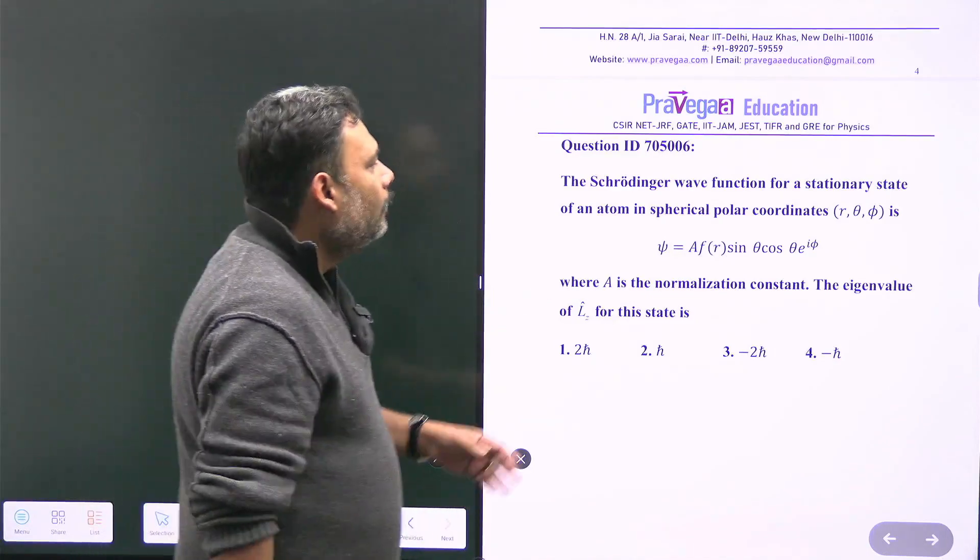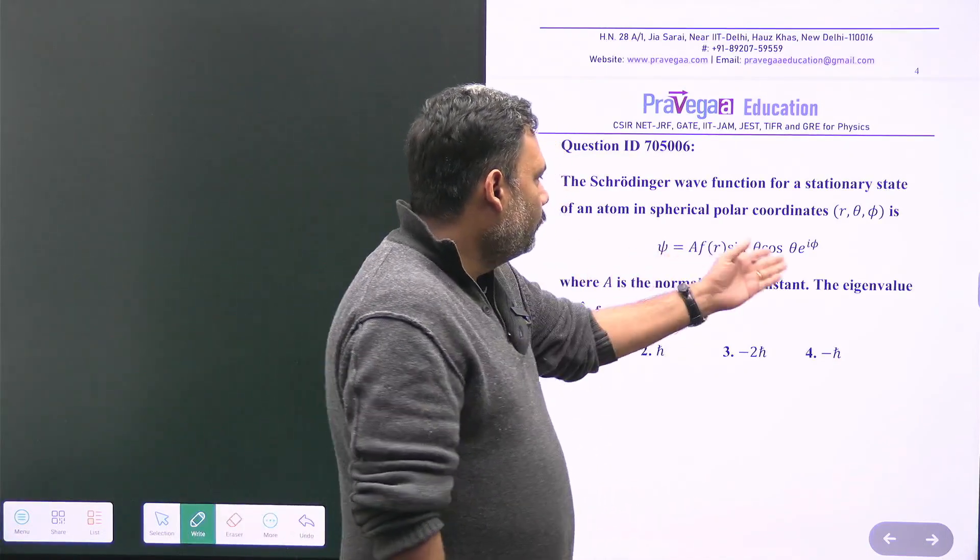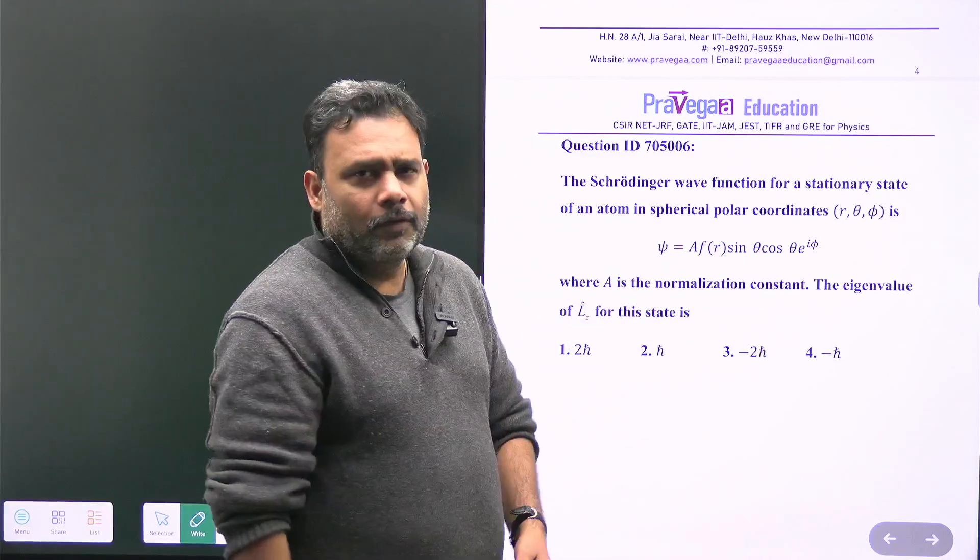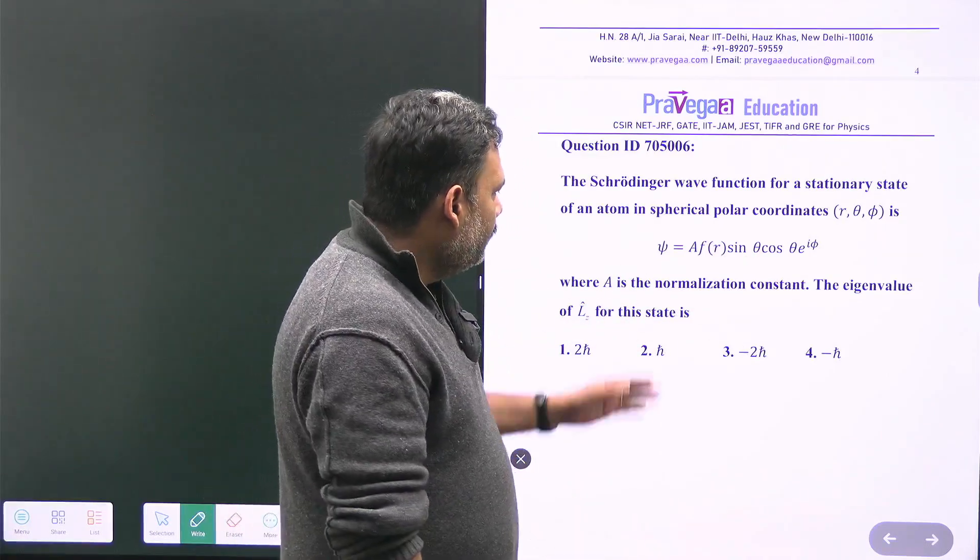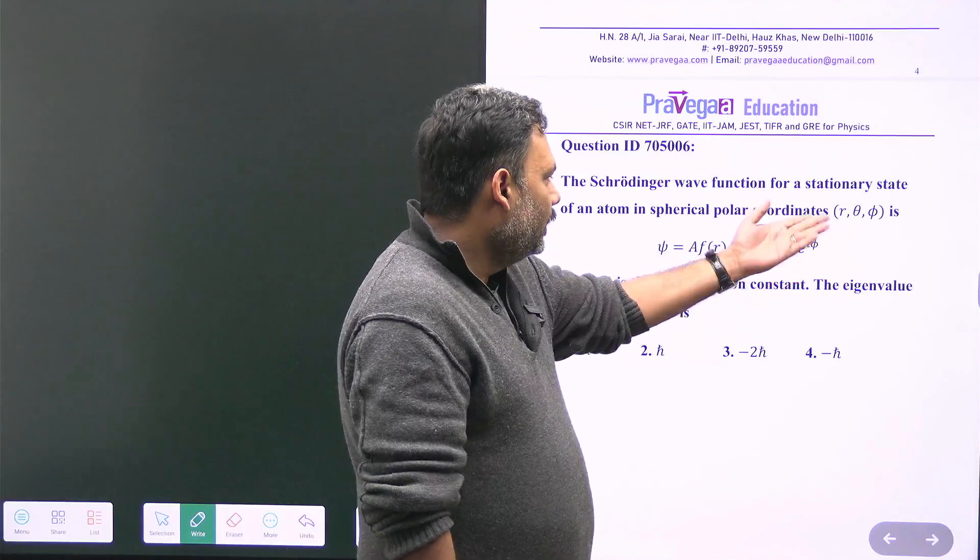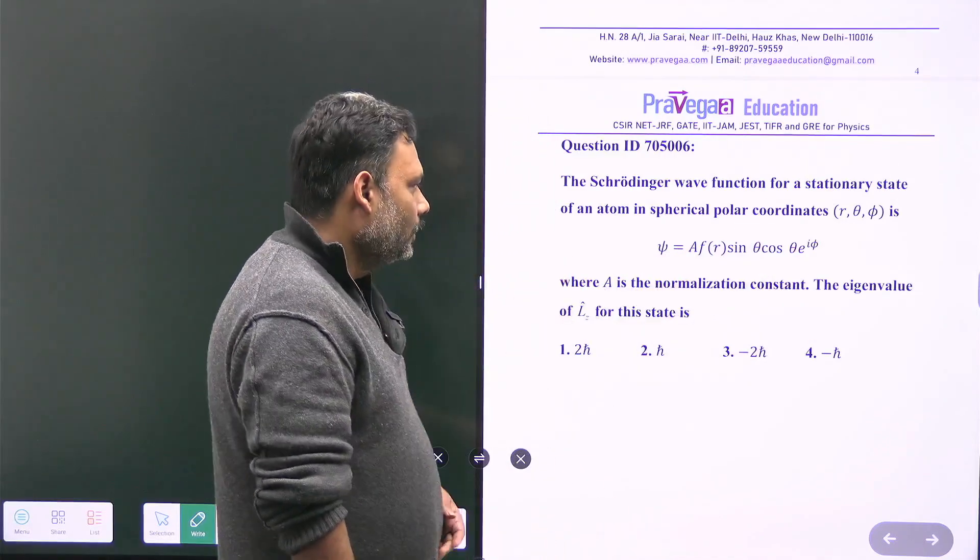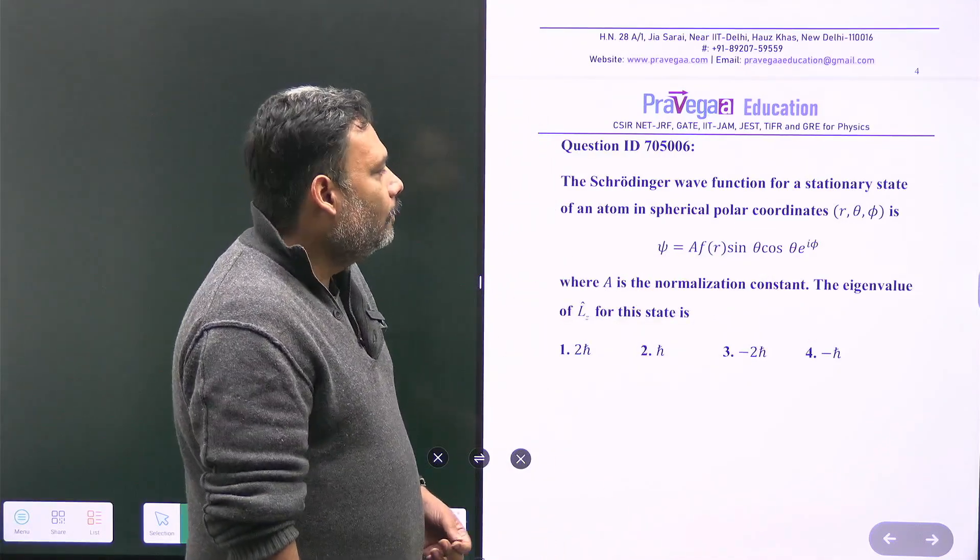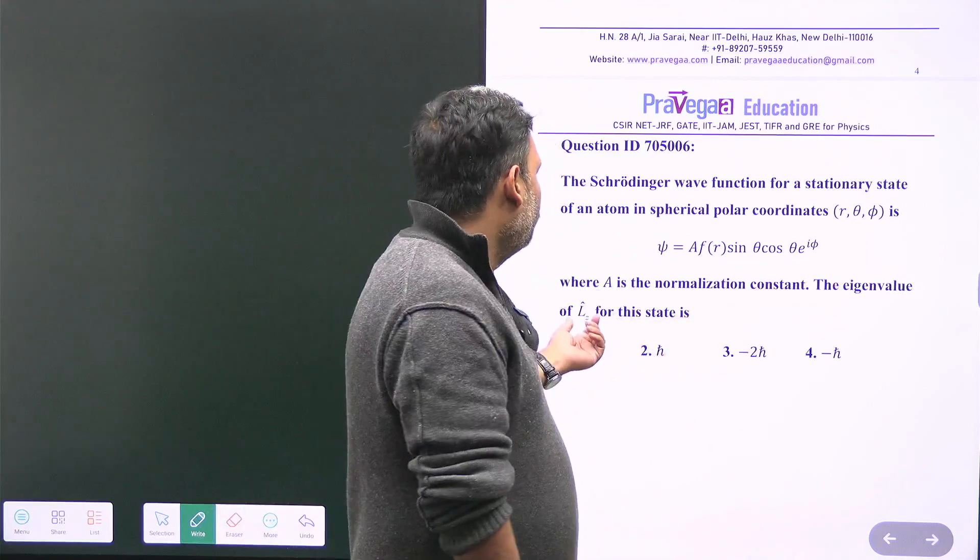The wave function is given in spherical polar coordinates as ψ = a f(r) sin θ cos θ e^(iφ), where a is the normalization constant. We have to calculate the eigenvalue of Lz for this state.